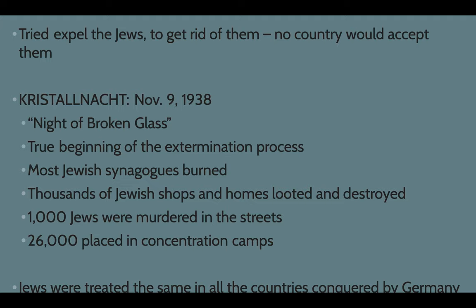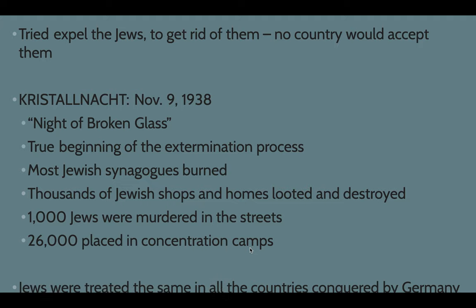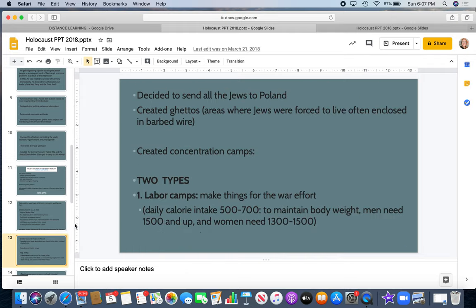On the night of November 9, 1938, all across Germany, most Jewish synagogues — Jewish places of worship — were burned and destroyed. Thousands of Jewish shops and homes were looted and destroyed. A thousand Jewish people were murdered in the street that night — one night. And 26,000 people — 26 times the number murdered — were placed in concentration camps. That is probably the phrase you know most from the Holocaust: concentration camps. We're going to get into that.